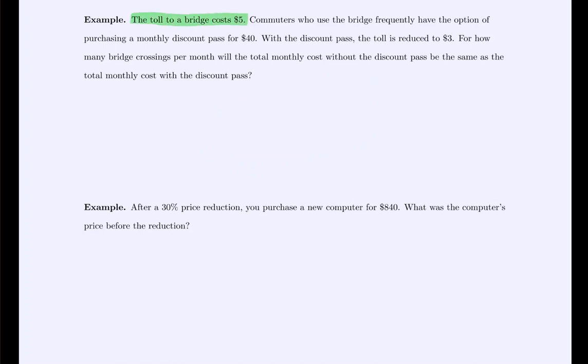Now, in this case, we have that a toll bridge costs $5 and we can realize that's per crossing. Commuters who use this bridge frequently have an option to purchase a monthly discount pass for $40. So they pay for the pass. And in addition to the $40, every time they pass the toll, it's $3 instead of $5. For how many bridge crossings per month will the total monthly costs be the same? Same makes us think of equal as the cost without the discount plan.